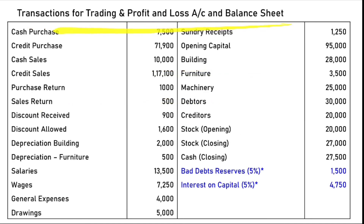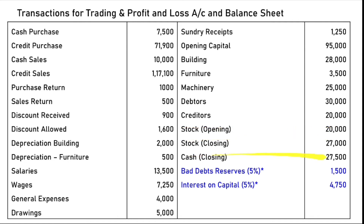Now we have to prepare the trading account, profit and loss account, and balance sheet. Cash purchase is given, credit purchase is calculated, cash sales is given, credit sales is calculated. Purchase return and sales return were given. Discount received and discount allowed were given. Depreciation: building 2,000, furniture 500. Salaries, wages, general expenses, and drawings are all given in the example. Opening capital is calculated, and all opening and closing balances of building, furniture, machinery, debtors, creditors are from the opening statement of affairs.